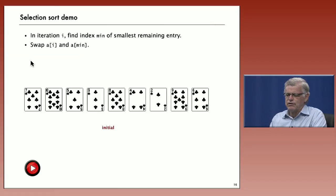In the i-th iteration, we go through the array to try to find the smallest remaining entry. In this case, the two is the smallest remaining entry. And then we'll swap that with the first entry in the array and then we know we've got one step done.